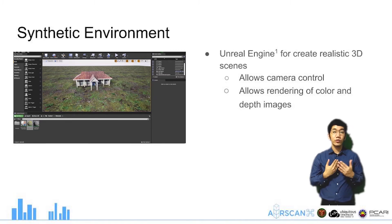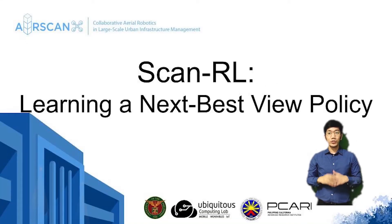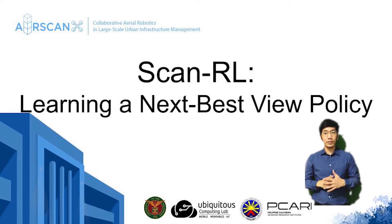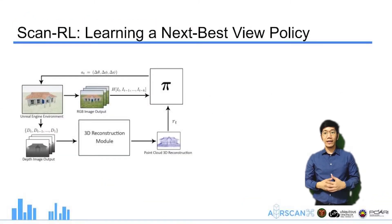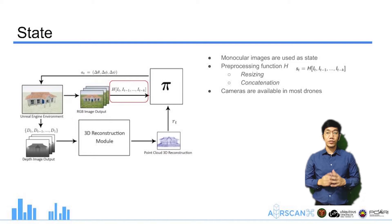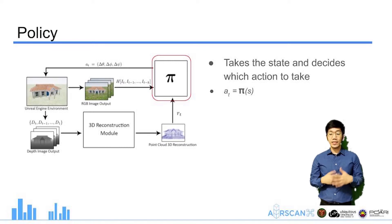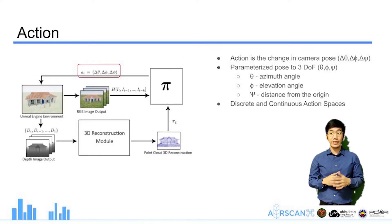To test this idea, we created our own synthetic environment using Unreal Engine to create realistic 3D scenes and allow for rendering images. We now introduce ScanRL: learning a next best view policy. Monocular images are rendered from the Unreal Engine environment and used as state. The current image is concatenated with 5 previous frames to form the state vector. The state is then used as input to a policy network which decides which action to take.